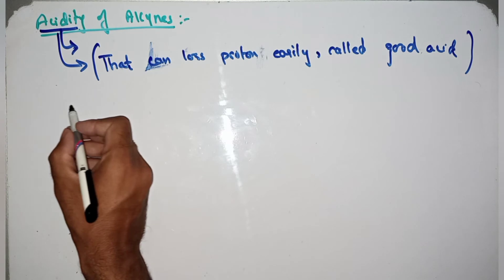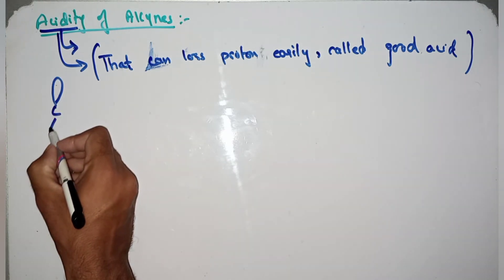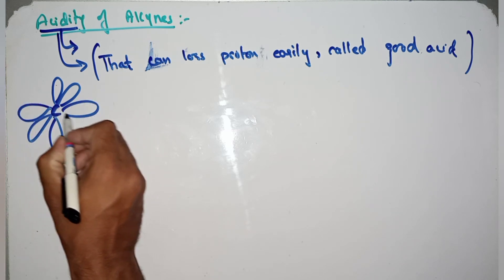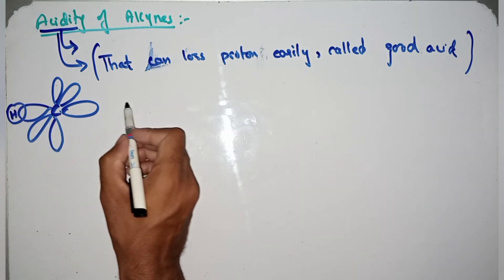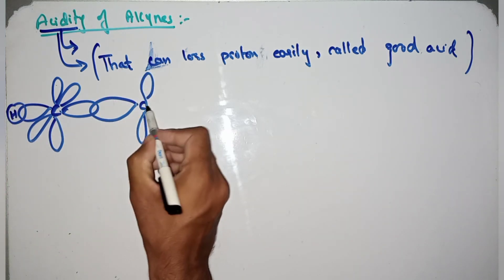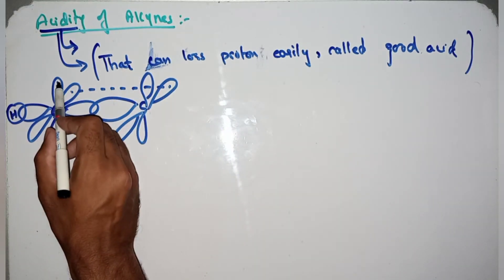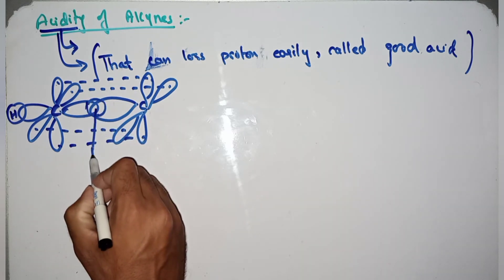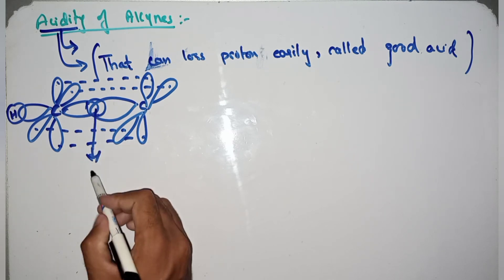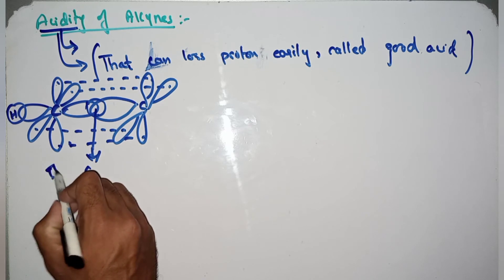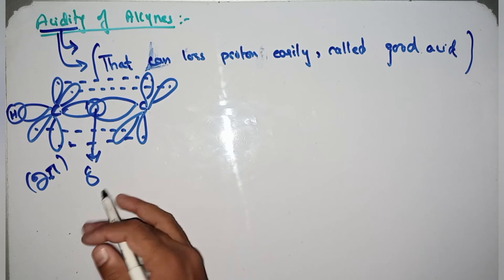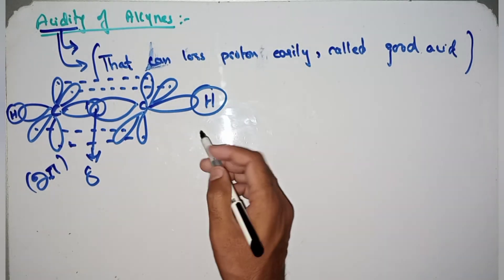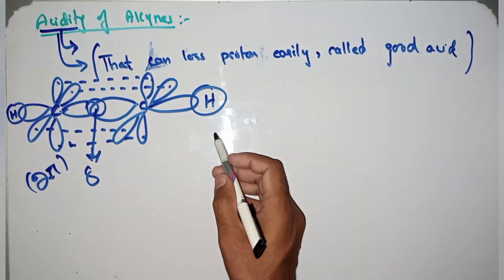According to the structure of alkyne, here is the carbon atom with hydrogen present. These two orbitals are bonded sidewise, while these two orbitals overlap head-to-head and produce sigma bonds, while the other two produce two pi bonds. Overall, three bonds are present: one sigma bond and two pi bonds.